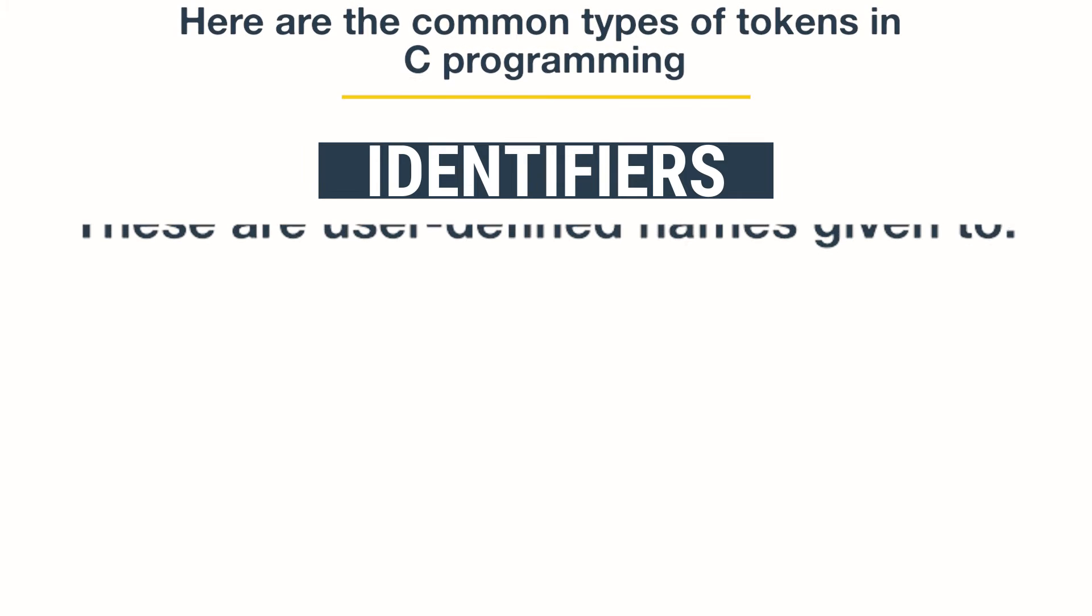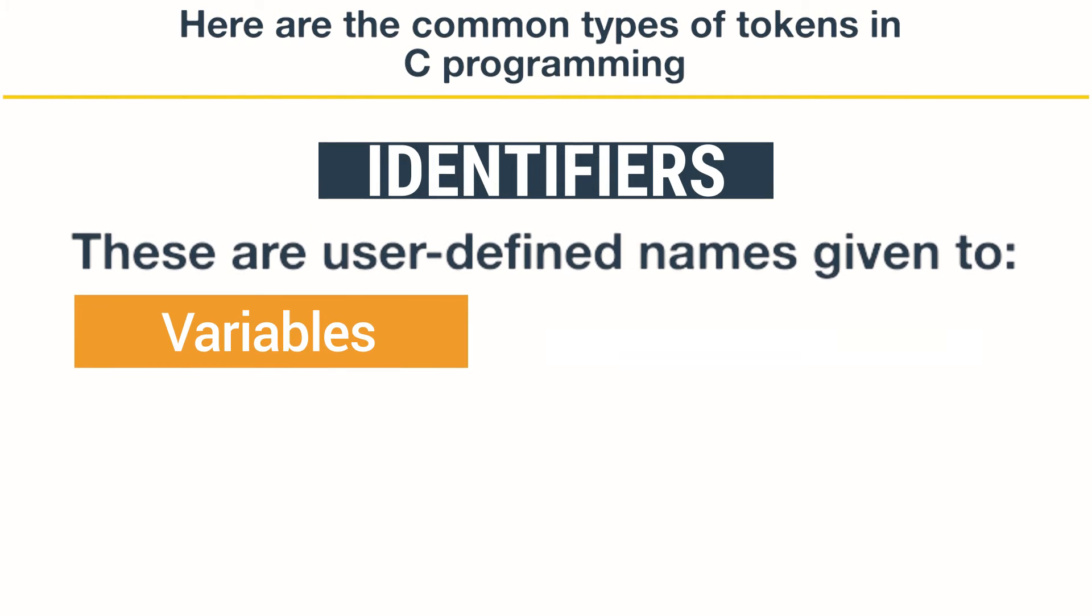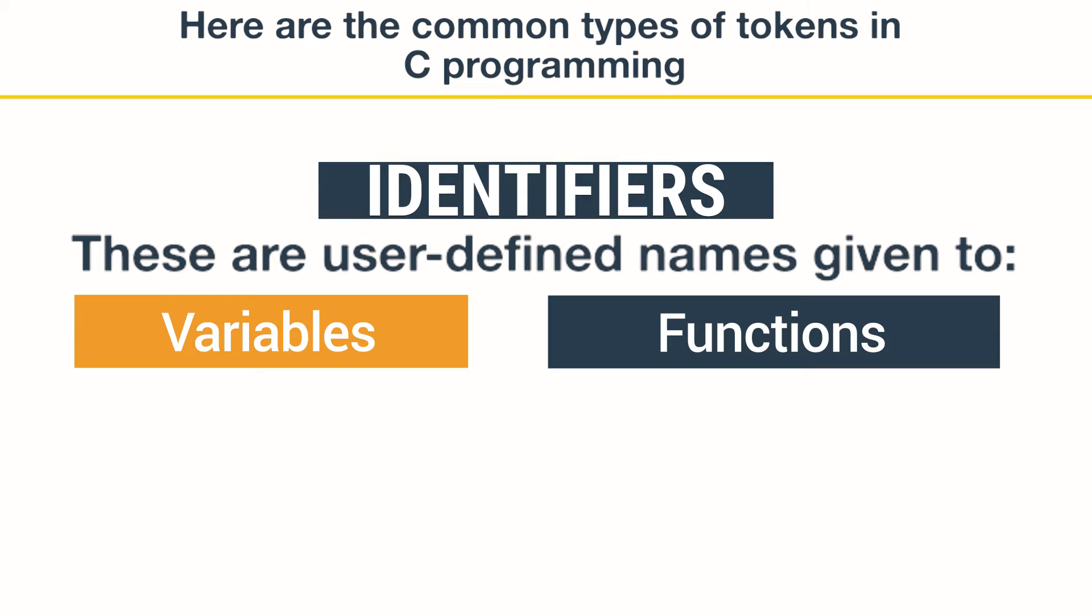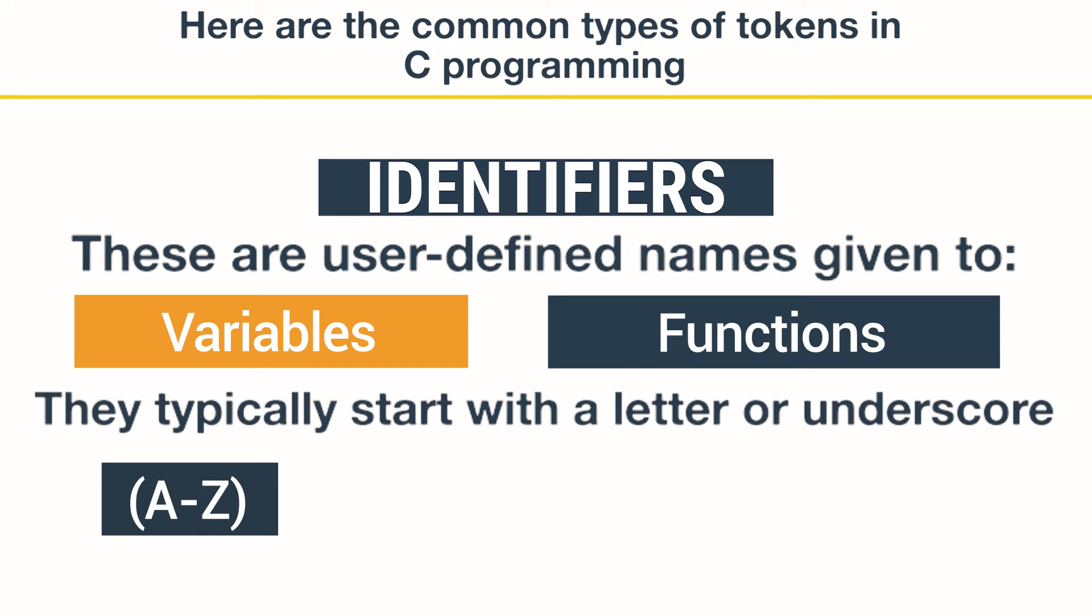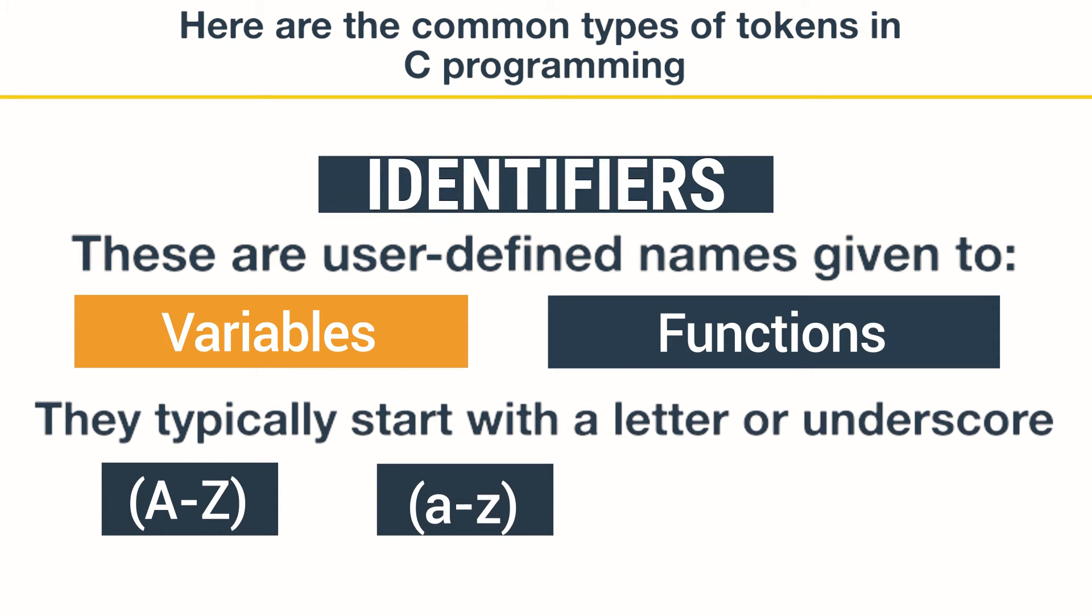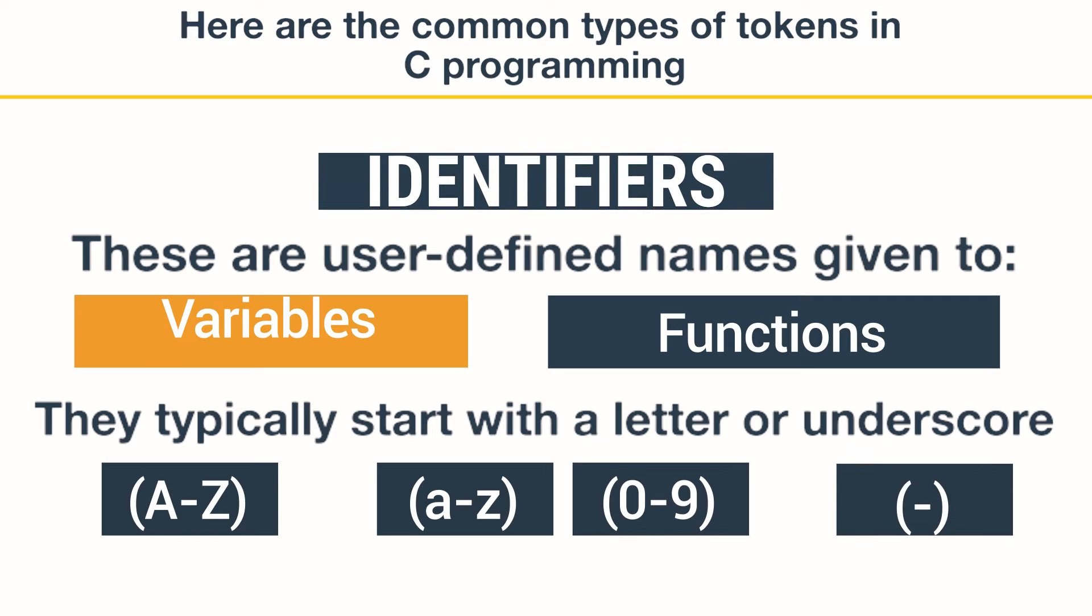Here are the common types of tokens in C Programming. Identifiers: these are user-defined names for variables, functions, and other program elements. They typically start with a letter or underscore and consist of letters, digits, and underscores.